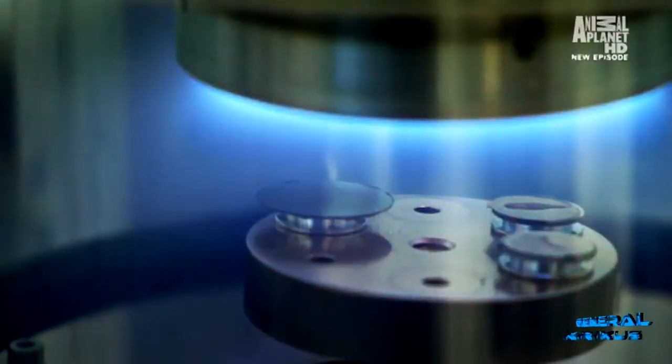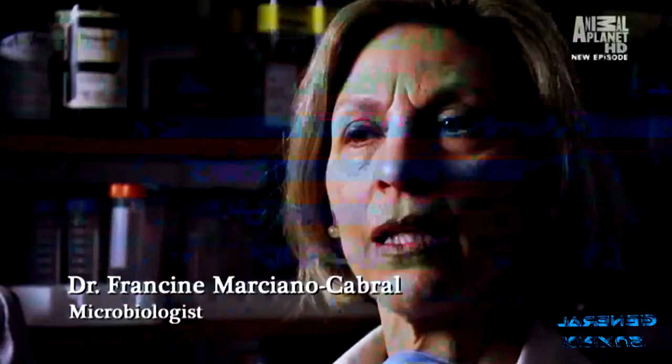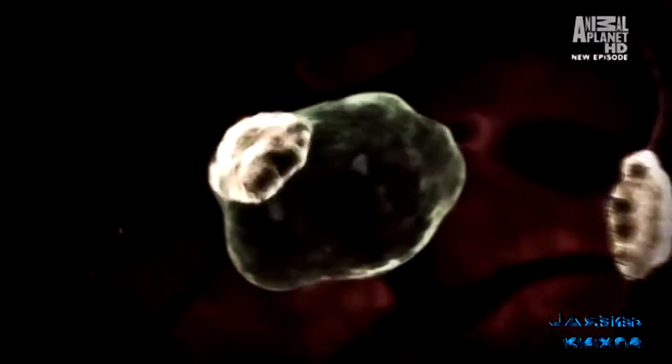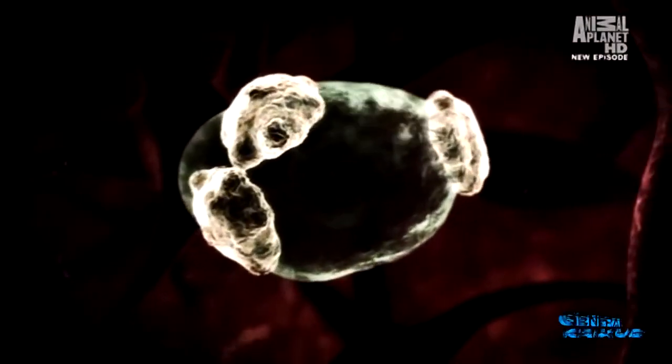Not only are the amoeba ruthless killers, they also have a cunning method of evading the body's immune system. The amoeba can defend itself by forming a coat, which is called a cyst. This coat surrounds the amoeba and is impervious to the host's immune system.